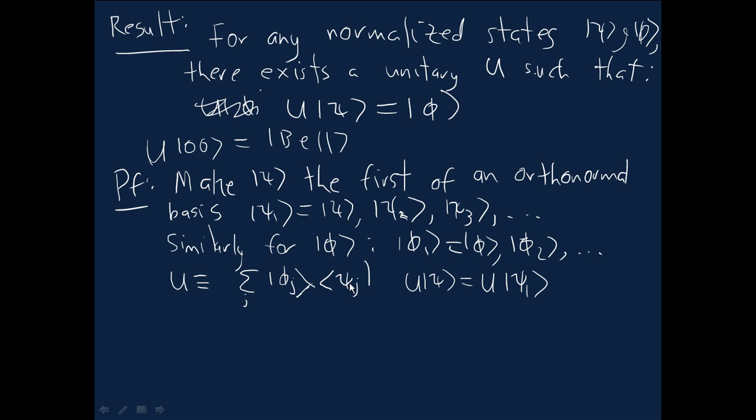But for all the other terms, so psi 2, for example, well, because psi 2 is orthogonal to psi 1, the second term just vanishes. It's 0. So the only term which survives is the j equals 1 term. So we get phi 1, and that, of course, is by definition equal to phi. So it has the right action on the state psi.